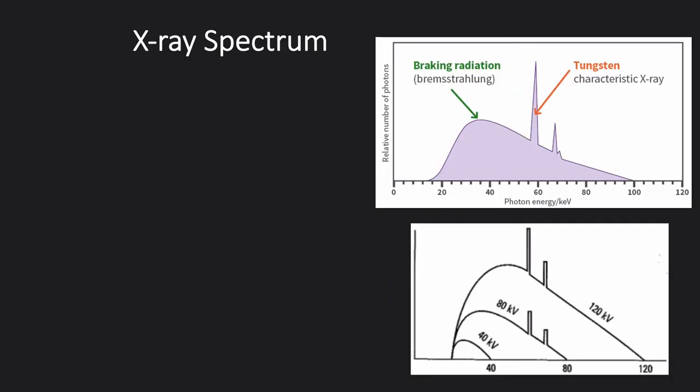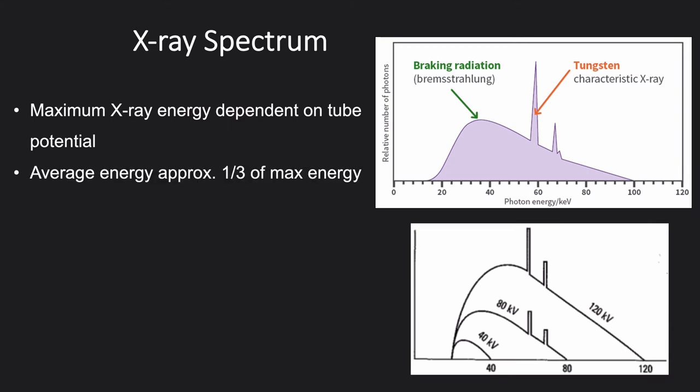The figures show a typical diagnostic X-ray spectrum with X-ray photon energy on the X-axis and number of photons in the energy band on the Y-axis. The maximum energy of X-rays is always limited to the maximum potential of the electric field applied between anode and cathode. Thus, we can control what X-ray energy we need. Due to the shape of the spectrum, the average energy is not the midpoint between highest and lowest energies, but is typically one-third of the maximum energy.